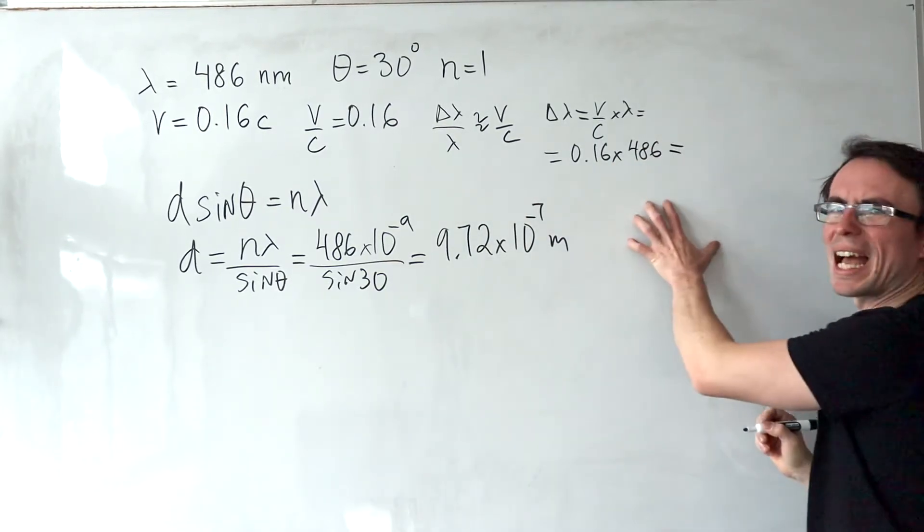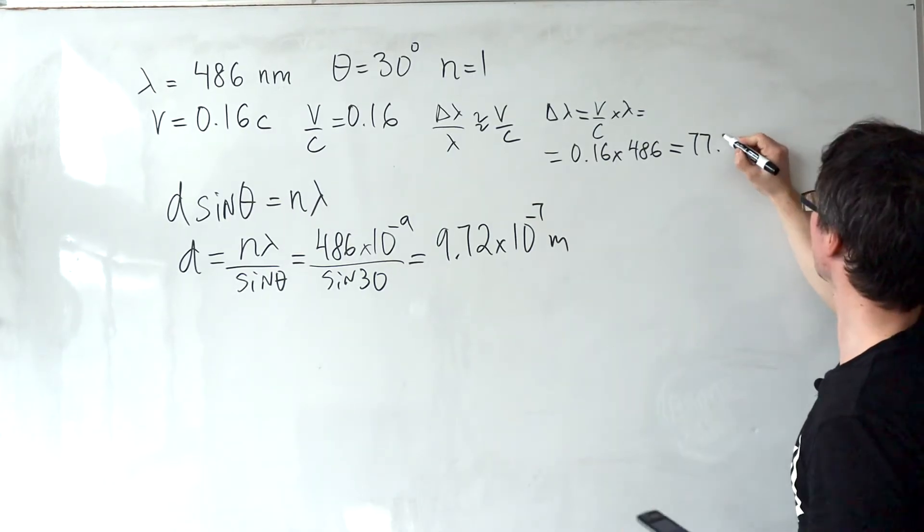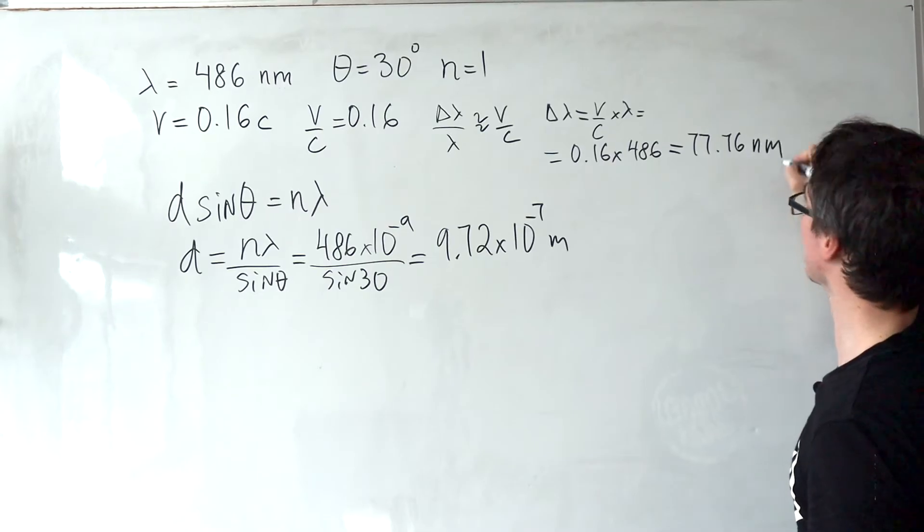V over C is just 0.16. The original wavelength was 486 nanometers. I'm just going to leave this in nanometers for now. And that's going to give me a change in wavelength of 77.76 nanometers.